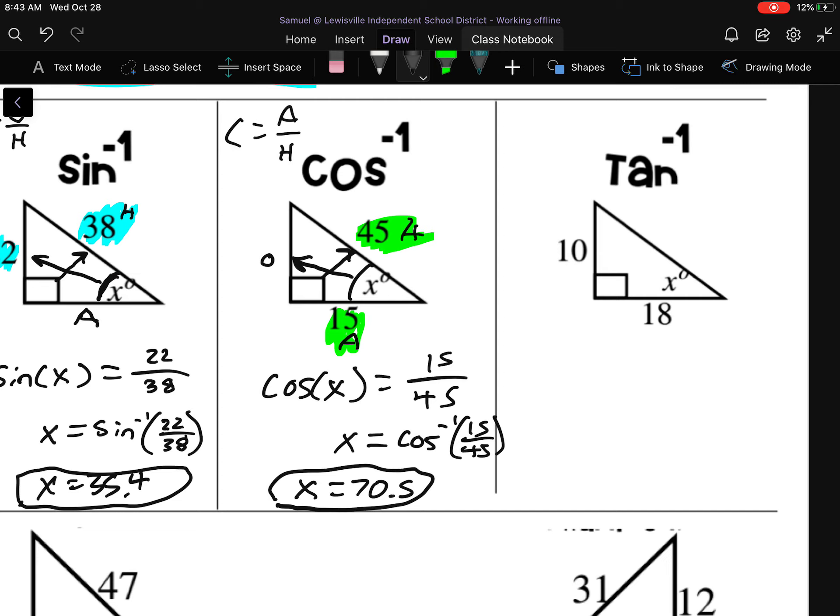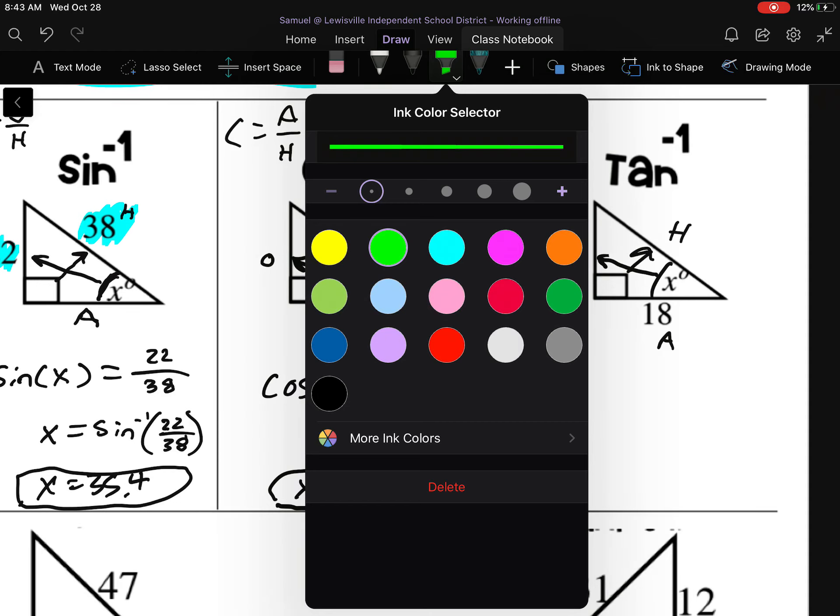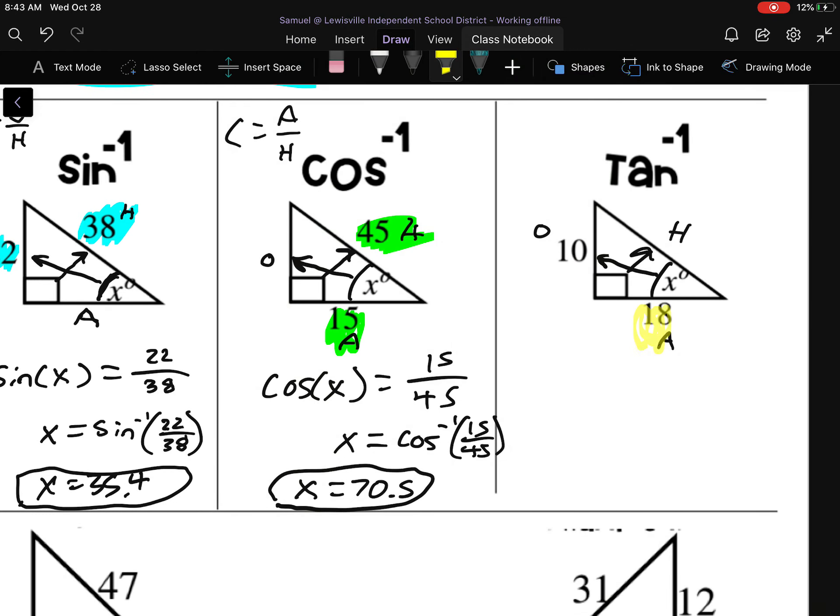So we can see this one is labeled tangent. But why is it tangent? Start at our angle. We draw our arrow. That's the O. Draw the arrow. That's the H. Last one is the A. So why is this tangent? It's tangent because we have A and O. And tangent is the one that deals with O and A. Tangent is opposite over adjacent.